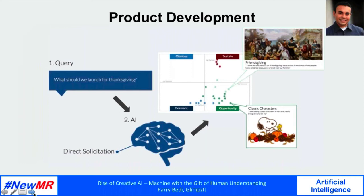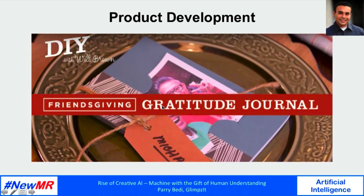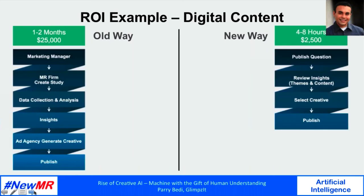The final example is Hallmark, who used the technology to develop e-greeting cards for their website. In order to discover hidden product opportunities, they wanted to understand how millennials who were not close to their family were spending Thanksgiving. Following the same process, they found that while some didn't do anything for Thanksgiving and others went home, there was an interesting segment that decided to celebrate the holiday with their friends instead — giving rise to the concept of a 'Friendsgiving' line of cards, journals, place settings, and so on.